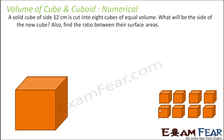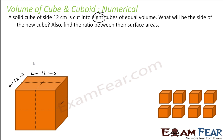A solid cube of side 12 centimeter is cut into 8 cubes of equal volumes. What will be the side of the new cube? To cut this into 8 cubes, a good way is to cut in this direction. If you cut in this direction, you'll get 1, 2, 3, 4, 5, 6, 7, and there's one cube behind, so you get 8 cubes.